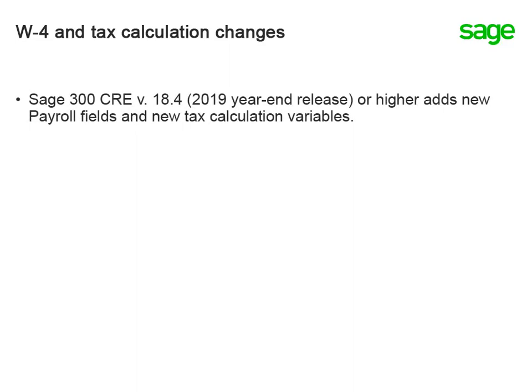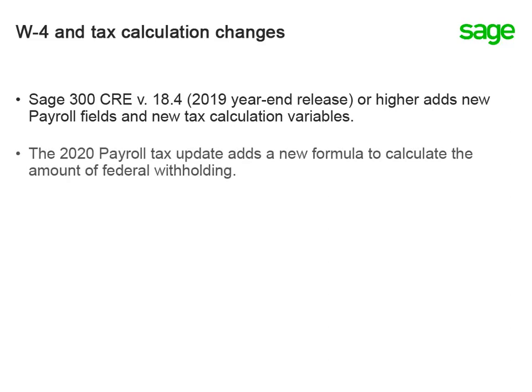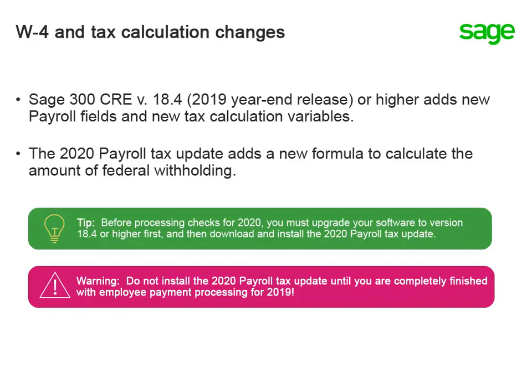To accommodate these federal withholding adjustment changes in the new W-4, version 18.4 of your SAGE software adds new payroll fields and tax calculation variables. The 2020 payroll tax update includes a new formula for calculating the amount of withholding. This means you must install the year-end version of the software, then download and install the 2020 payroll tax update before processing checks for 2020.